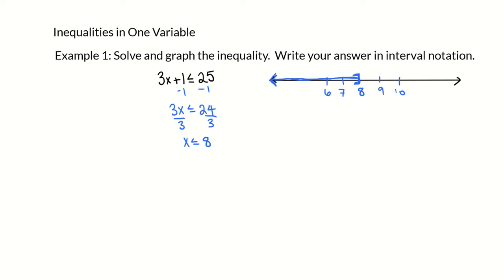In interval notation, we'll write this interval as negative infinity up until 8, with an open parenthesis around negative infinity and a square bracket around 8. The square bracket shows that the point value of 8 is included in the inequality.